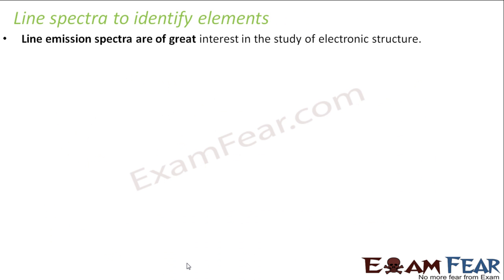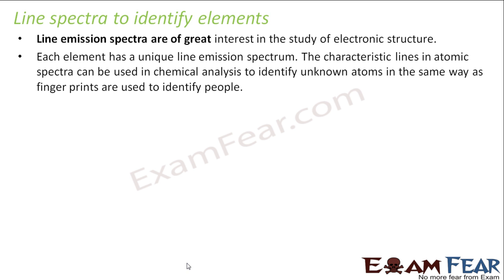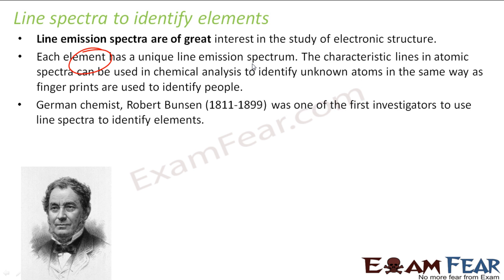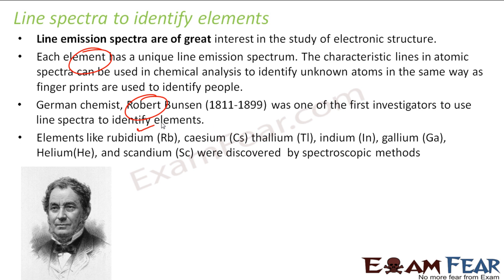Line spectra can also be used to identify elements. That is a very big field actually. Each element has a unique spectrum because each element has a unique quantized energy level. So for example the fingerprint is used to identify humans. Similarly the line spectra can also be used to identify elements. And this guy, German chemist Robert Bunsen, he was the first investigator to use line spectra to identify elements. It was surprising that rubidium, cesium, thallium, indium, gallium, helium, scandium, these were discovered by spectroscopic method only. It was so powerful that there were elements which were very difficult to differentiate using chemical reactions. So it was differentiated using the spectra.